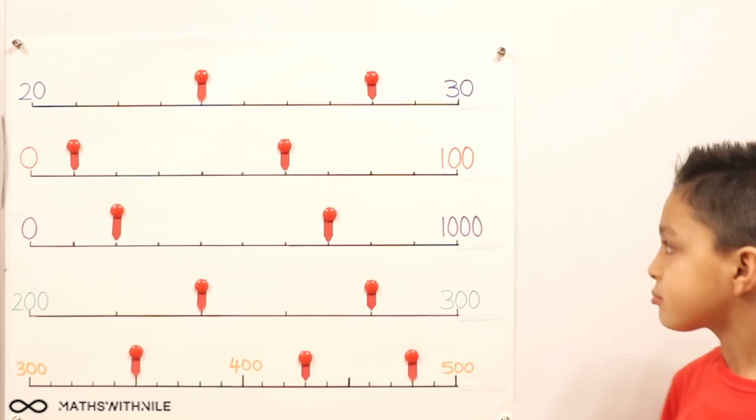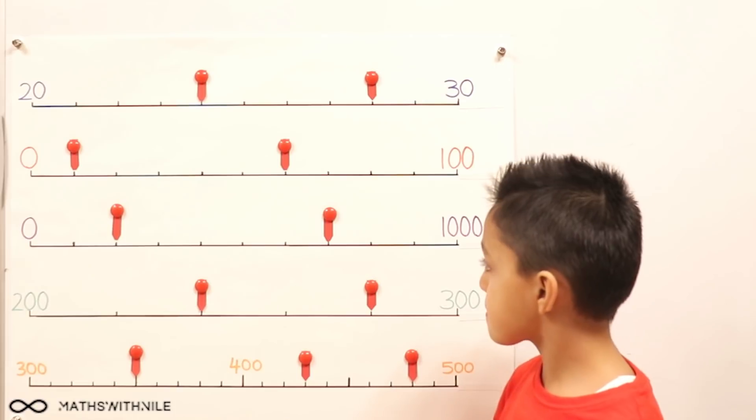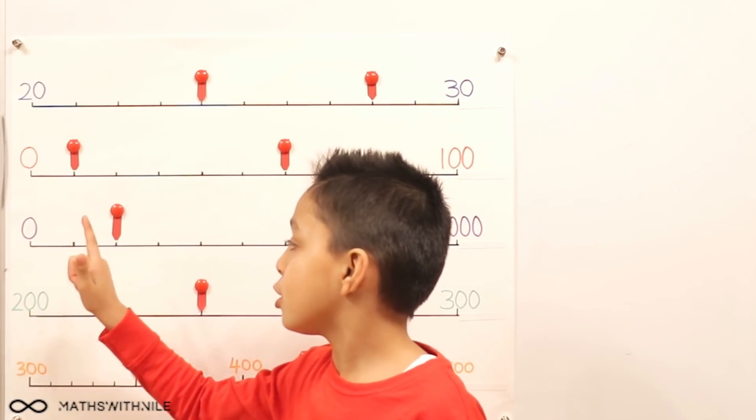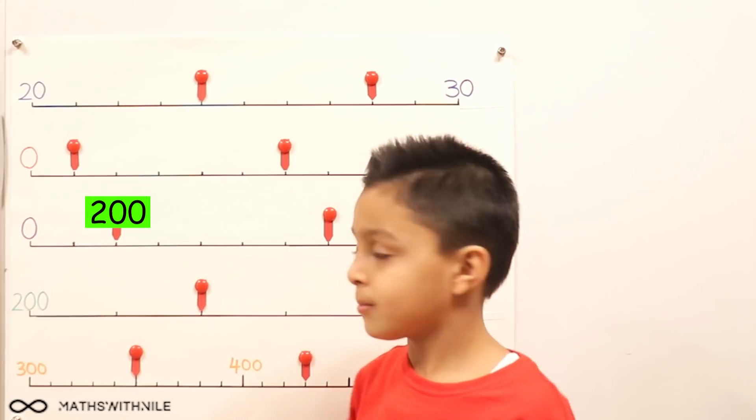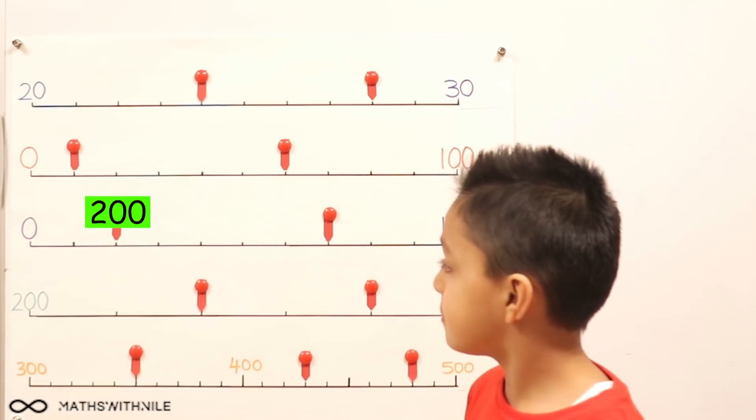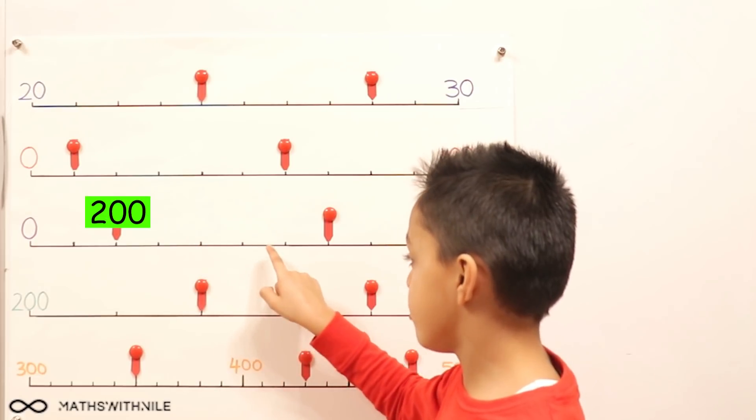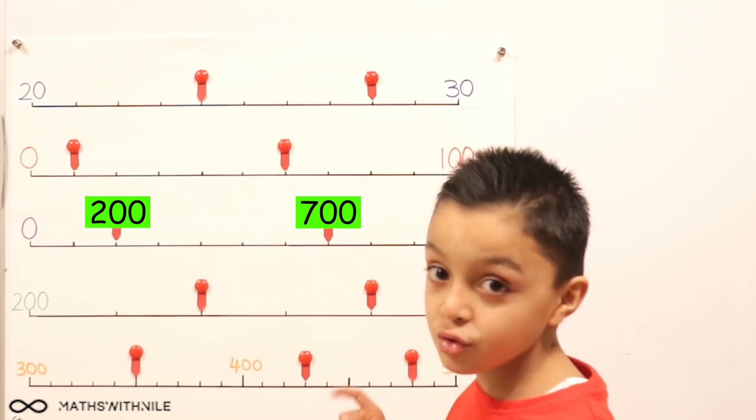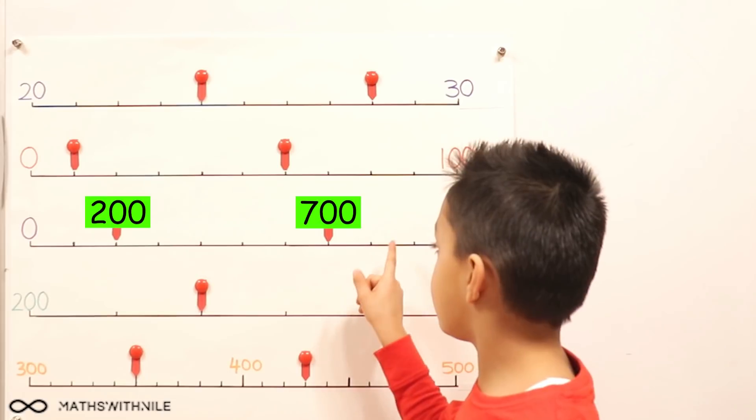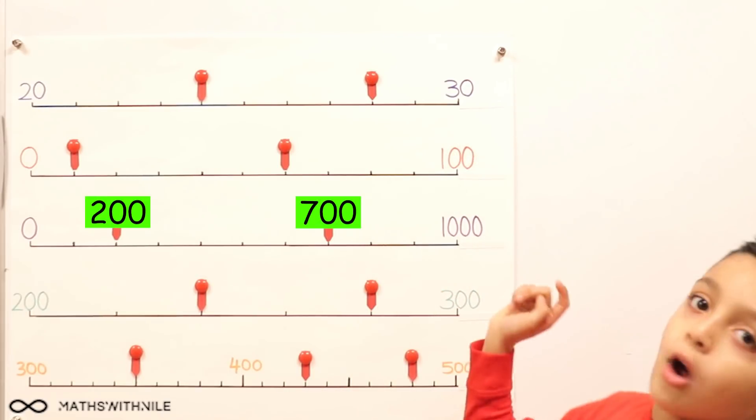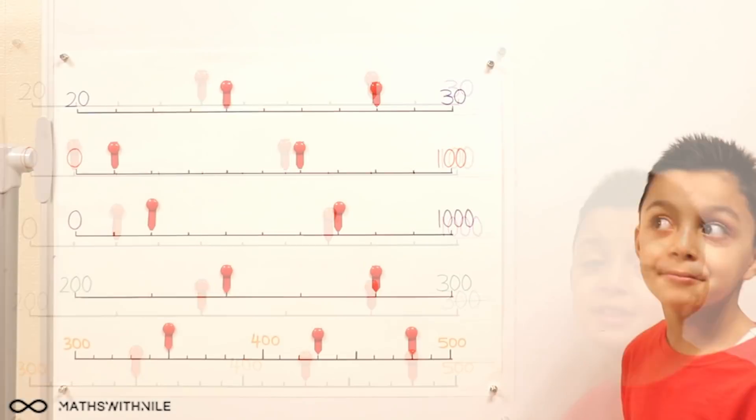So tell us the value of those two numbers that the arrows are pointing to. Zero, 100, 200. So the first one is 200. 200, 300, 400, 500, 600, 700. And 700.